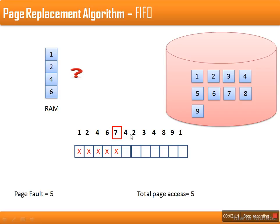Now the question is: this new page 7 — which page will it replace? Will it be placed at this location, or this one, or this one? FIFO provides a solution for this problem. First-in first-out says that the page which was brought into RAM first is the page that has to be replaced first.